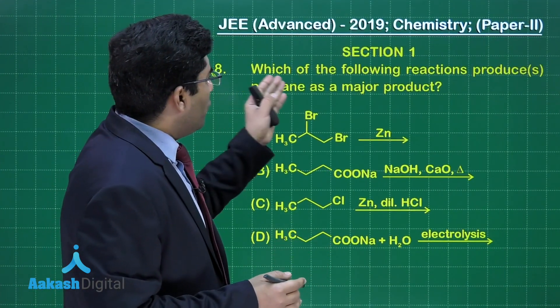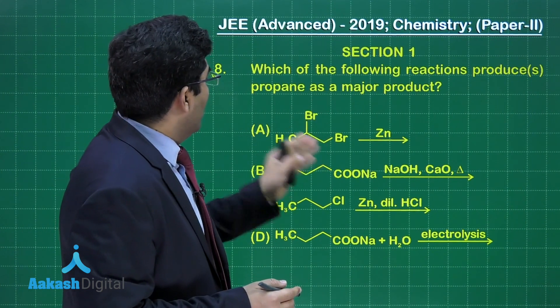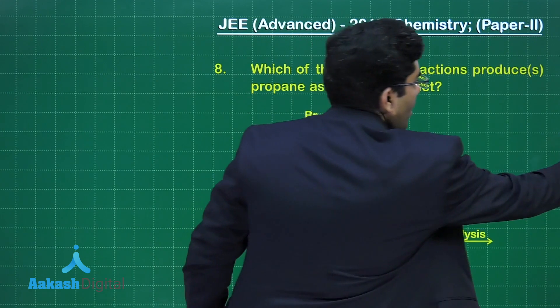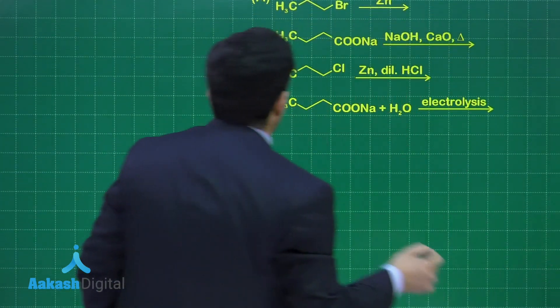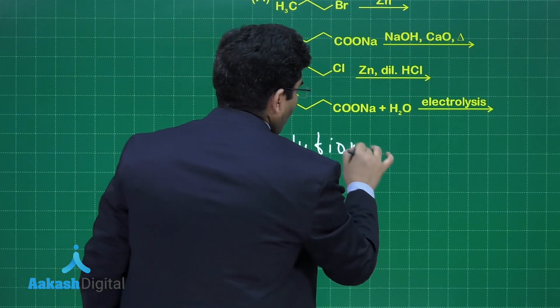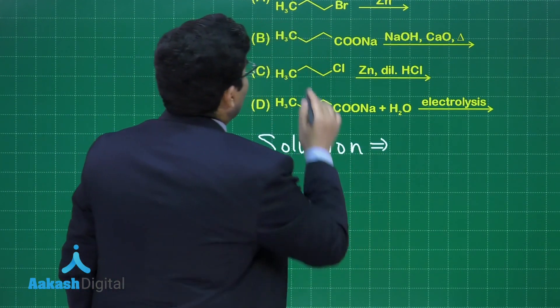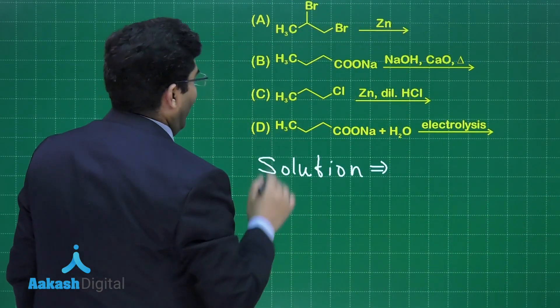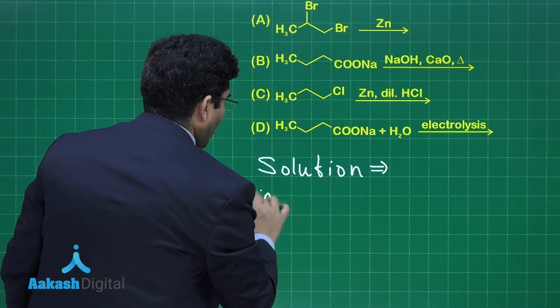Now in this question, which of the following reactions will produce propane as the major product? Let us discuss all four reactions given in the question. The solution is, the first reaction which is given to us is there is a vicinal dibromide, and that is option number A.